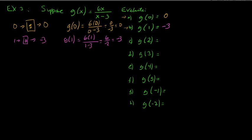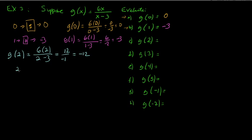For example b: g(1) means replacing x with 1. So we get 6 times 1, divided by 1 minus 3. That's 6 divided by negative 2, which equals negative 3. So the input is 1 and the output is negative 3. For example c: g(2) gives us 6 times 2, divided by 2 minus 3. That's 12 divided by negative 1, which equals negative 12. So two goes in to g and negative 12 comes out.